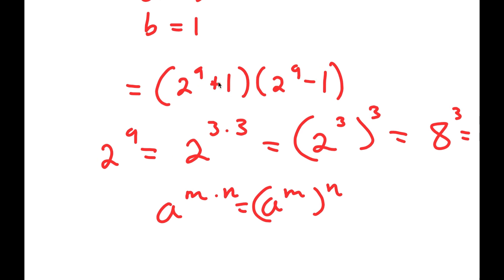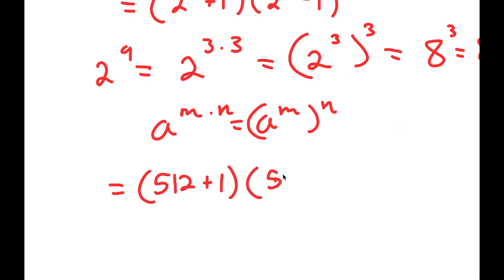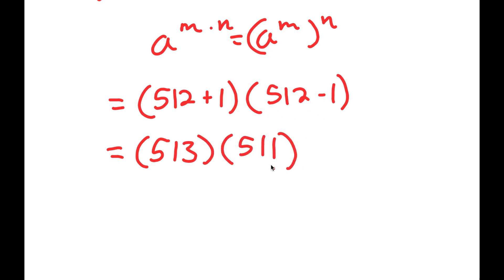So 2 to the power of 9 is 512. Now I get 512 plus 1 times 512 minus 1. So 512 plus 1 is equal to 513, and 512 minus 1 is equal to 511. So I get 513 times 511.